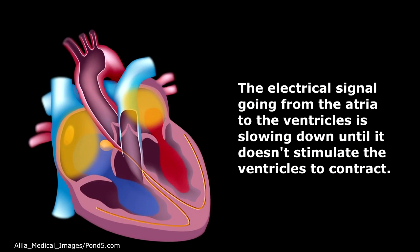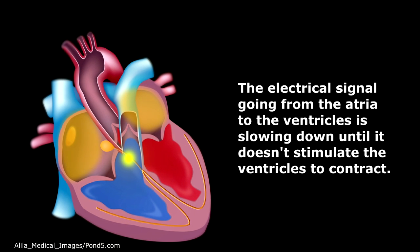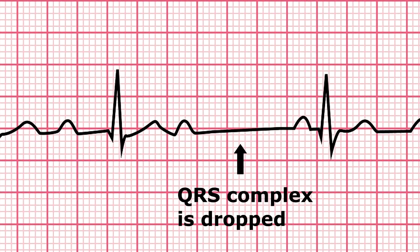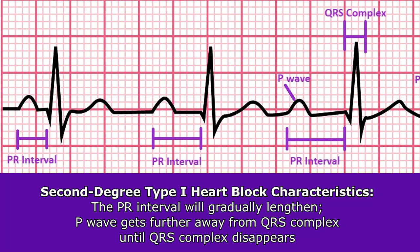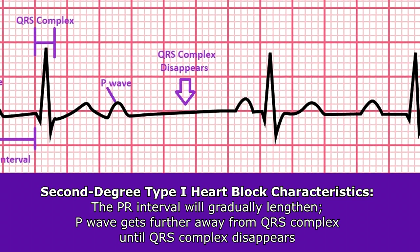The reason this rhythm is occurring is because the electrical signal going from the atria to the ventricles is getting progressively slower until it doesn't stimulate the ventricles to contract, hence no QRS complex is produced. So all of a sudden we will drop a QRS complex. The PR interval gradually lengthens, the P wave gets further and further from the QRS complex, then there's a P wave with a missing QRS complex, and then the cycle repeats itself.